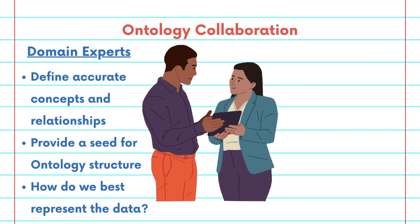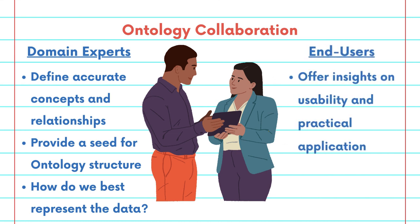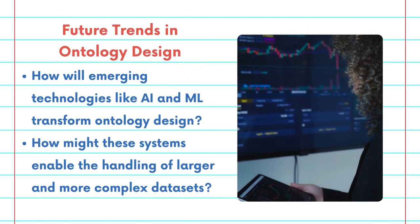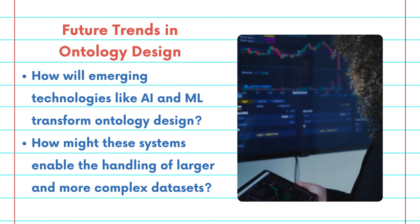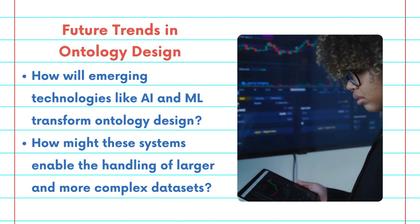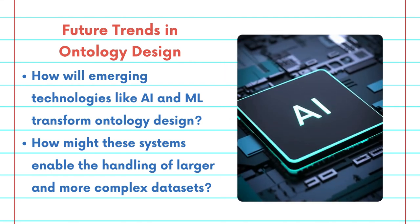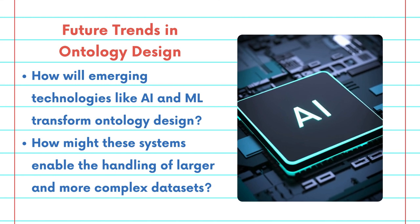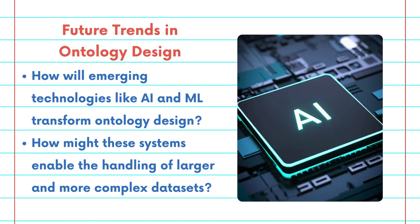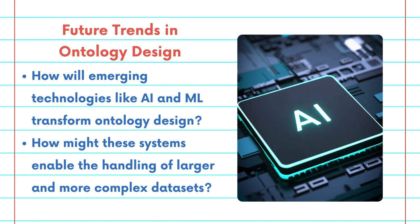Domain experts play a crucial role in answering the challenging question of how to best represent the data. Meanwhile, end users offer insights on usability and practical application. With the ever-increasing amount of data, the role of ontologies in knowledge management is becoming more critical. How will emerging technologies like AI and machine learning further transform ontology design? How might these systems enable the handling of even larger and more complex datasets?